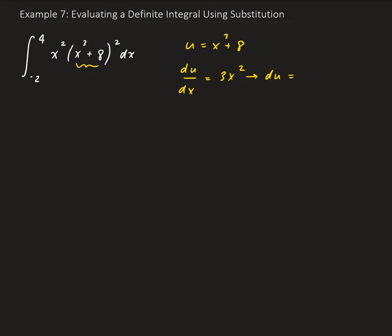That's the same thing as du equal to 3x squared times dx. We're going to ignore the limits of integration for now and take care of those in a little bit. So we have the integral of u squared. Since du equals 3x squared dx, we can divide both sides by 3, so 1/3 du equals x squared times dx. So x squared times dx gets replaced by 1/3 du.